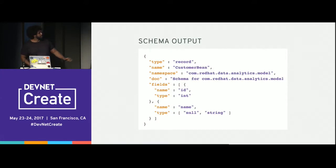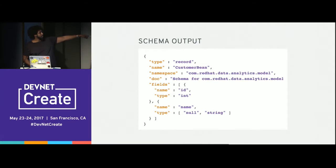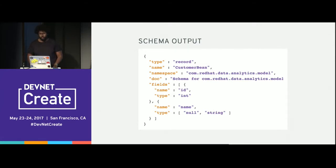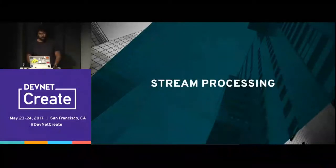This is what a schema looks like in Avro — it's basically JSON. The name field is optional, while the ID field is required.